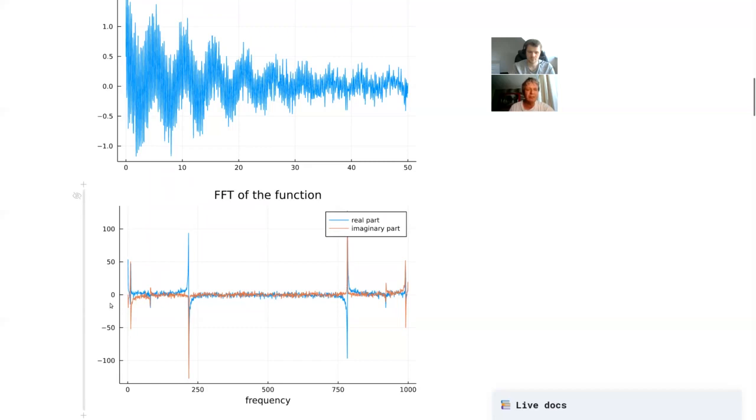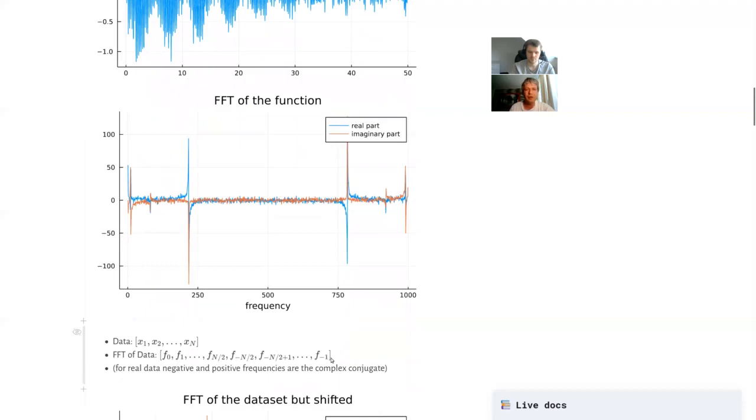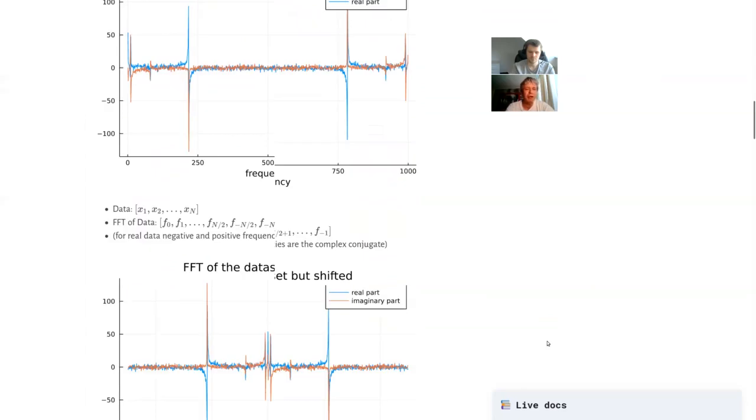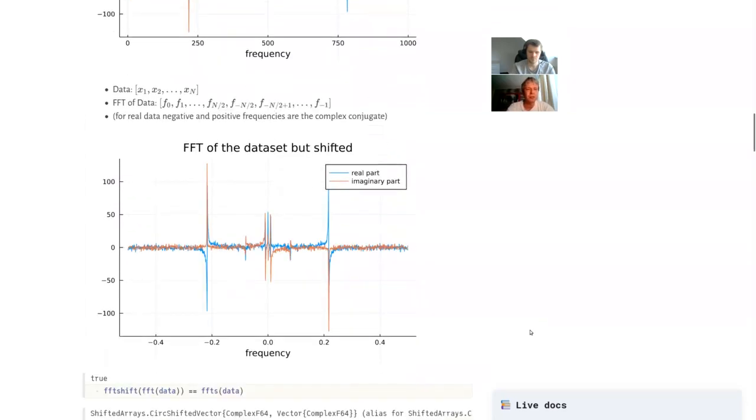And that means that the negative frequencies, which should appear on the negative side, actually appear on the right-hand side because it counts backwards. And of course, FFTW provides routines to deal with that. So that's the routine called FFT shift. But we have packaged this into two convenience methods that allow you to work in an easier way with Fourier transforms.